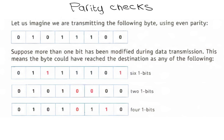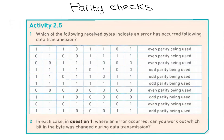Now let's do an activity. Which of the following received bytes indicate an error has occurred following data transmission? You should have concluded that any of the bits in this question could have been changed where there was a transmission error. Therefore, even though an error has been flagged, it is impossible to know exactly which bit is in error.